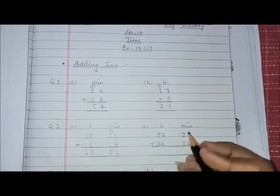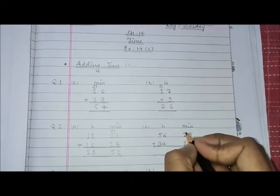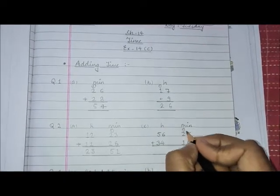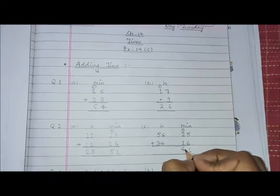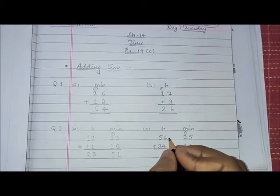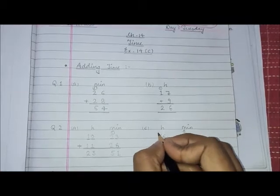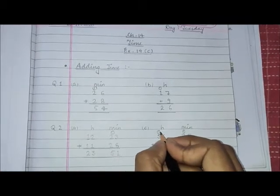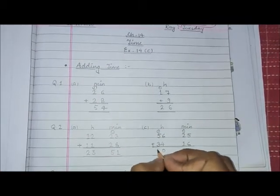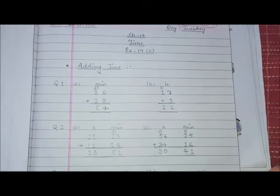In C part: 6 plus 5 is 11, 1 carry. 2 plus 1 is 3, plus 1 is 4. So 41 minutes. And here 6 plus 4 is 10, so 0 here, 1 carry. 5 plus 1 is 6, 6 plus 3 is 9. So 90 hours 41 minutes is the answer.